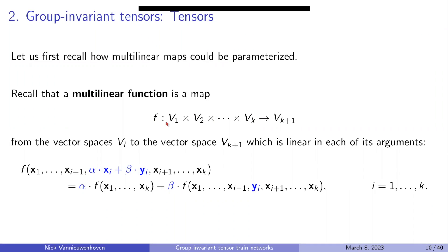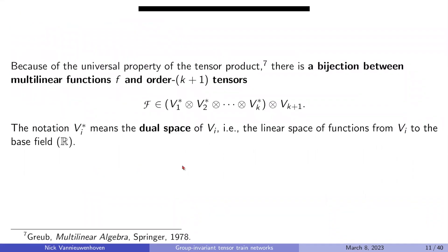A well-known result is the universal property of the tensor product: there is a bijection between multilinear functions f and order-(k+1) tensors. Our multilinear function takes inputs in vector spaces Vi, which is why dual spaces appear in the tensor product. This thing that lives in a tensor product of vector spaces is formally a tensor, and the relation to multilinear functions becomes clear from this formula. The notation V* means the dual space of V — the linear space of functions from V to the real numbers.